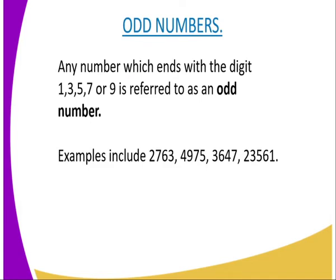Let us now go to odd numbers, whereby we say any number which ends with the digits 1, 3, 5, 7 or 9 is referred to as an odd number. However big the number is, just look at the last digit and see whether it is 1, 3, 5, 7 or 9 — that is when you shall see that number is an odd number.